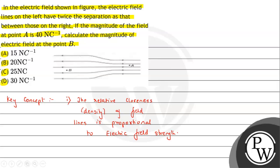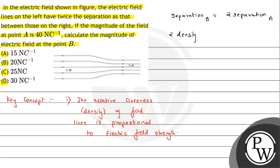From the question, the electric field lines on the left have twice the separation as those on the right. That means the separation is twice at point A compared to point B. Since greater separation means lower density, we can say: twice the density at B equals the density at A.